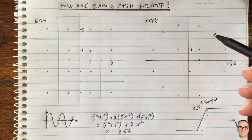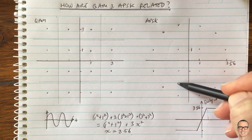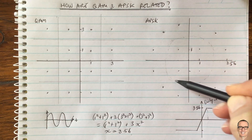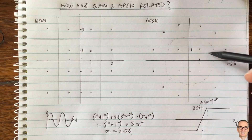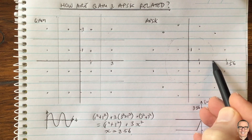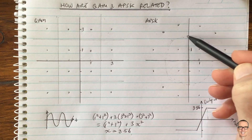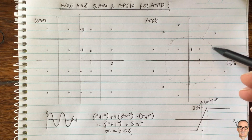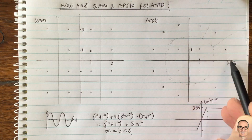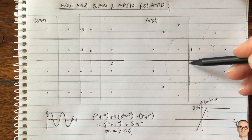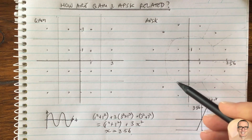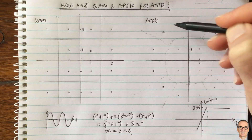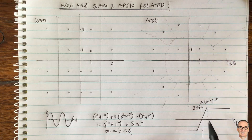What about APSK? The decision boundaries here are: roughly a circle in the middle separating the inner ring from the outer ring — is the received point inside or outside that circle? Then for distinguishing between the inner points, it's lines along the axes; and for the outer points, it's lines radiating out from the center, equally spaced between the constellation points.